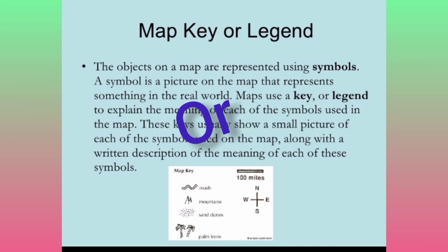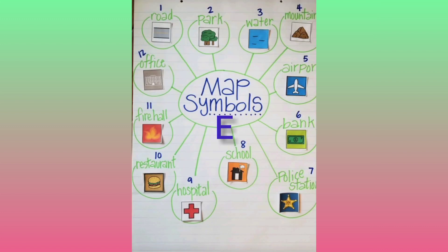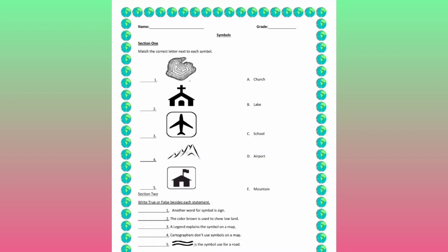Next we are going to discuss about map key or legend. Map key gives us the information about the symbols which were used in the map. Each symbol represents something in the real world, like water bodies, mountains, forest areas, railways, and many more.